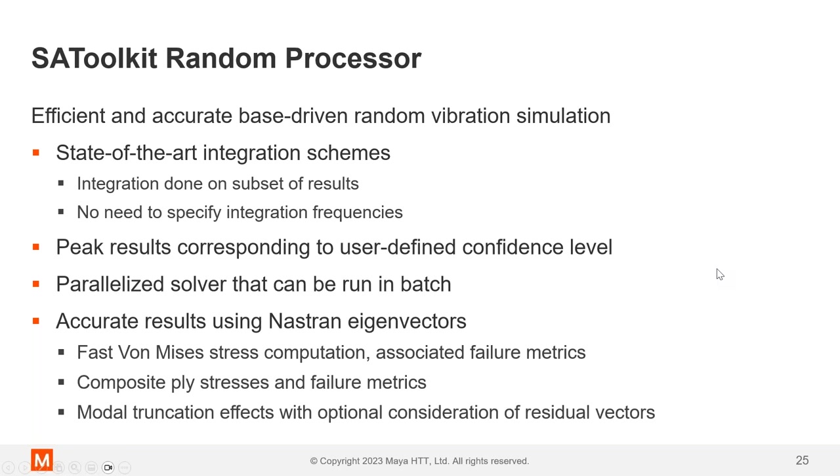The random processor, again, is efficient and accurate base driven random vibration simulation, uses some state of the art integration schemes. That's part of why it's so fast. The peak results correspond to a user defined confidence level. So that's your, normally we're looking at our three sigma responses. Again, you can parallelize this. You can run it in batch. And again, the results are accurate and match Solution 111 for the standard acceleration stress tensors.